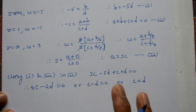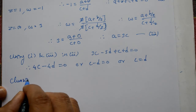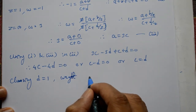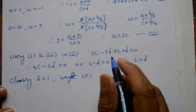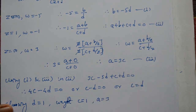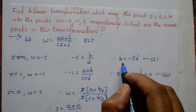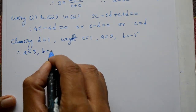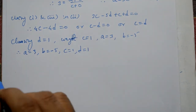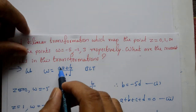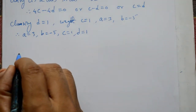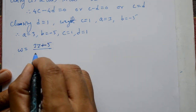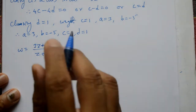Choosing d = 1: then c = 1. From equation 3: a = 3c = 3. From equation 1: b = -5d = -5. So a = 3, b = -5, c = 1, d = 1. Substituting these values, the required bilinear transformation is: ω = (3z - 5) / (z + 1).